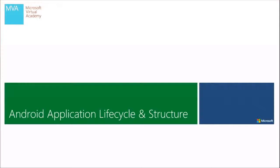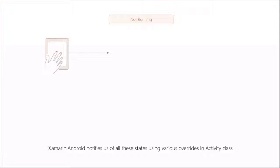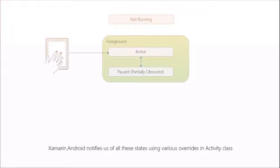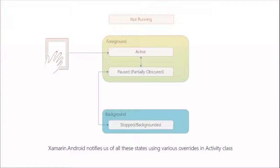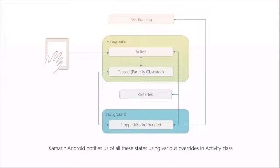Like in iOS, Android has application lifecycle states and structure. Android notifies us of all these different states and changes. When a user uses your application, it's going to go from not running, come into the foreground, and go into the active state. Potentially — if a phone call comes in or they push the home button — you're going to get paused, partially obscured, and then stopped or backgrounded. From there you could go into not running, or get restarted and go back into the active state. The names are a bit different from iOS, but the logic is essentially the same.